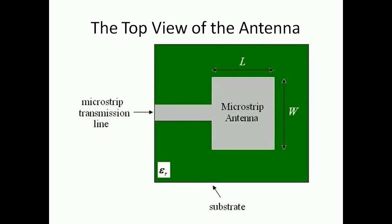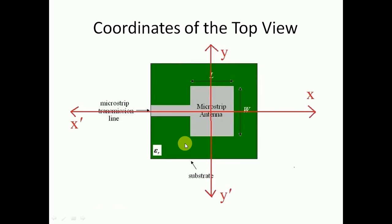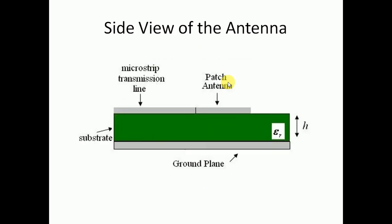These are the basic dimensions of the rectangular patch antenna — length and width — and depending upon the length and width, the resonant frequency of the antenna changes. We also have to select the length and width of the substrate and ground plane so we can accommodate the microstrip antenna and the feed line. The antenna will be placed such that the center of the antenna and the substrate remain at the origin of the coordinate system.